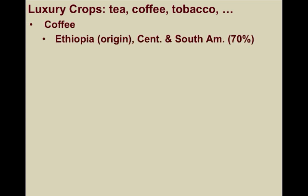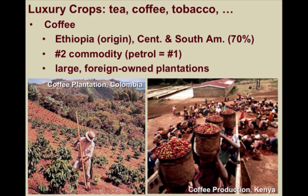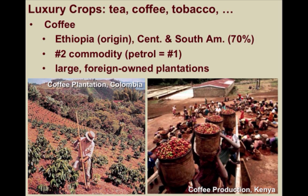Coffee was first domesticated in around present-day Ethiopia, but today it thrives in Central and South America, where approximately 70% of the world's annual production is harvested. The main reason has to do with geography — these countries have just the right soil and just the right climate — and the United States, just to the north, buys more than half of all coffee sold, while Western Europe imports most of the rest. After petroleum, coffee is the second most valuable traded commodity in the world. In many cases, coffee is produced on enormous foreign-owned plantations, where it is picked by local laborers hired at very low wage rates.